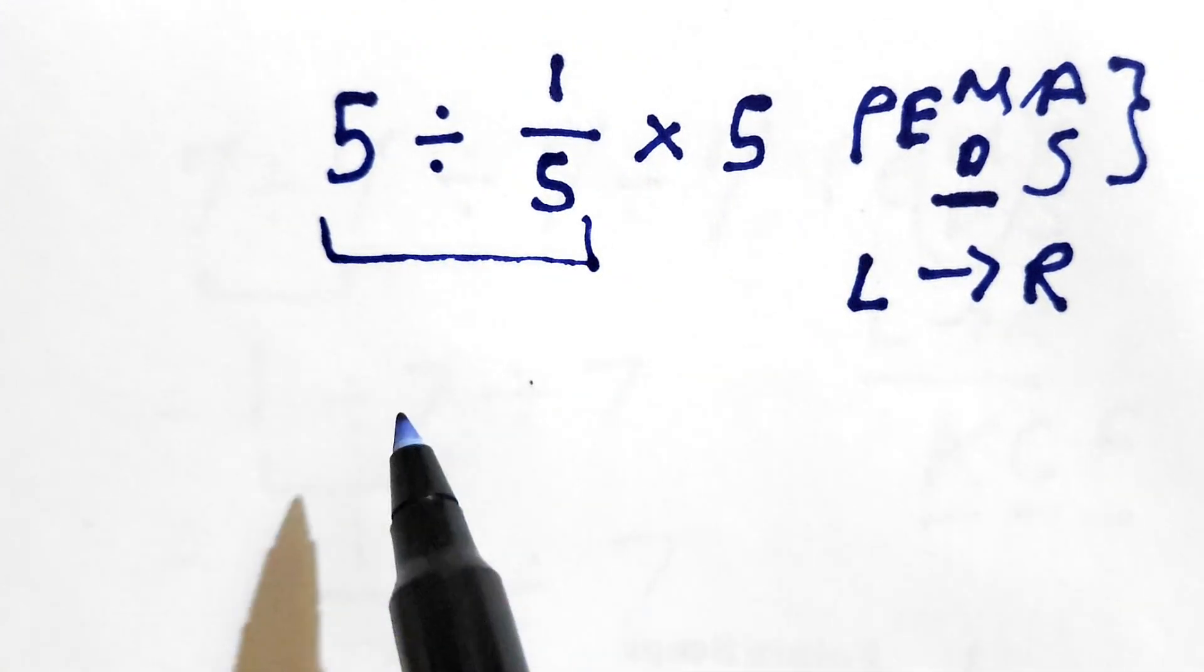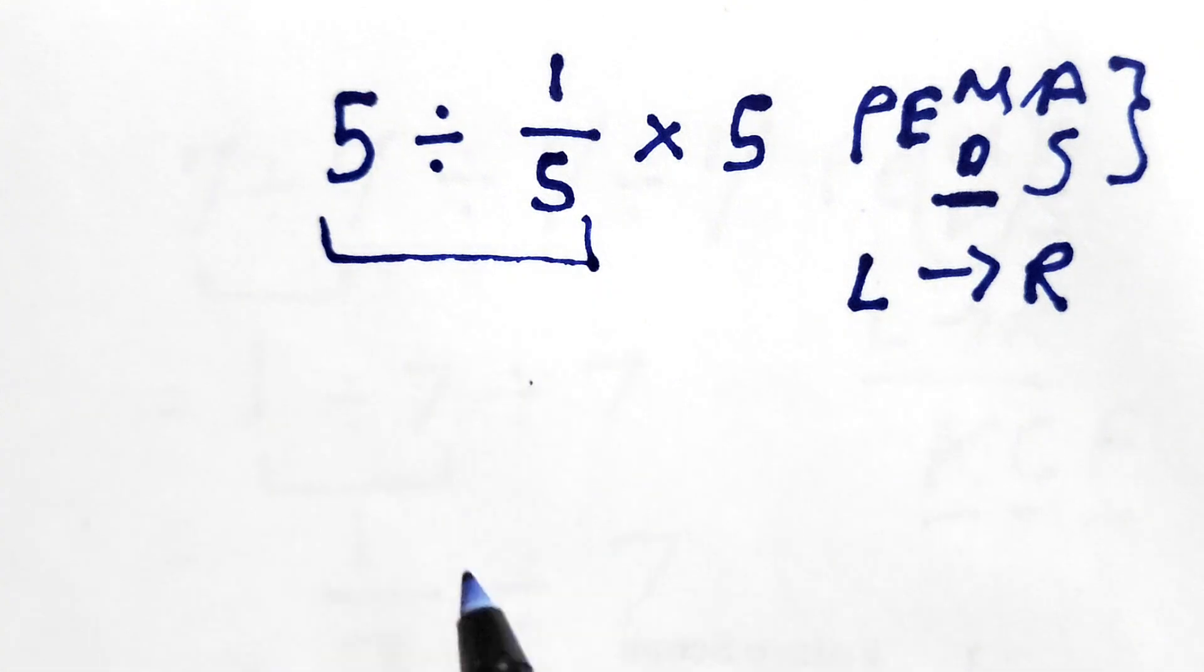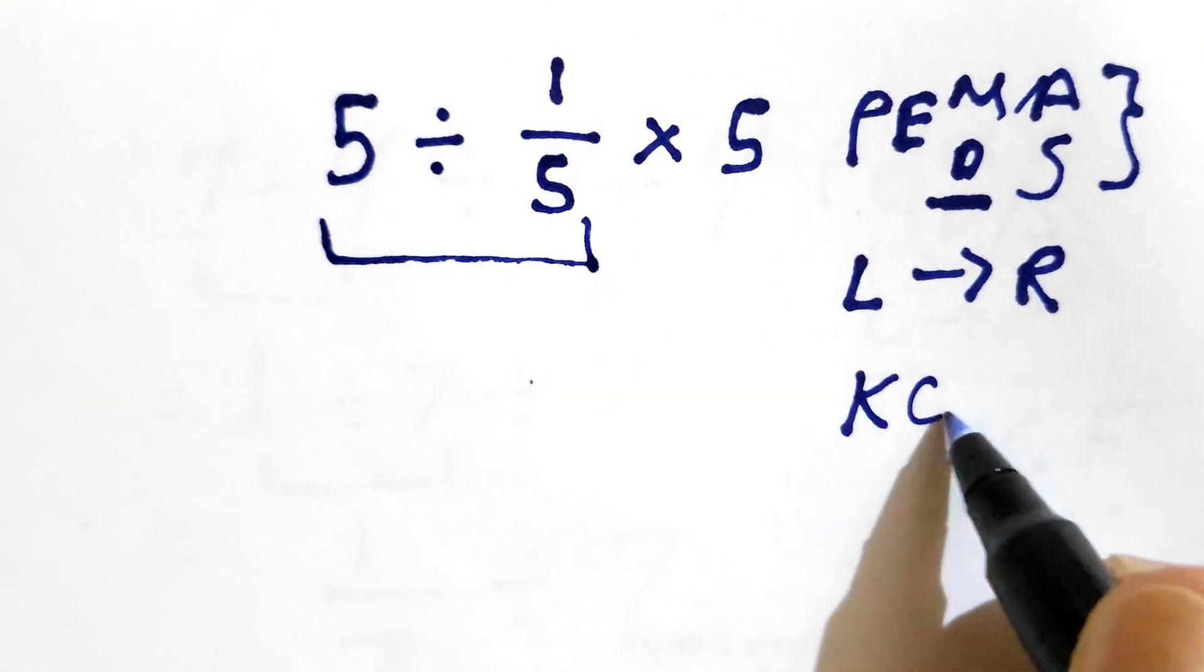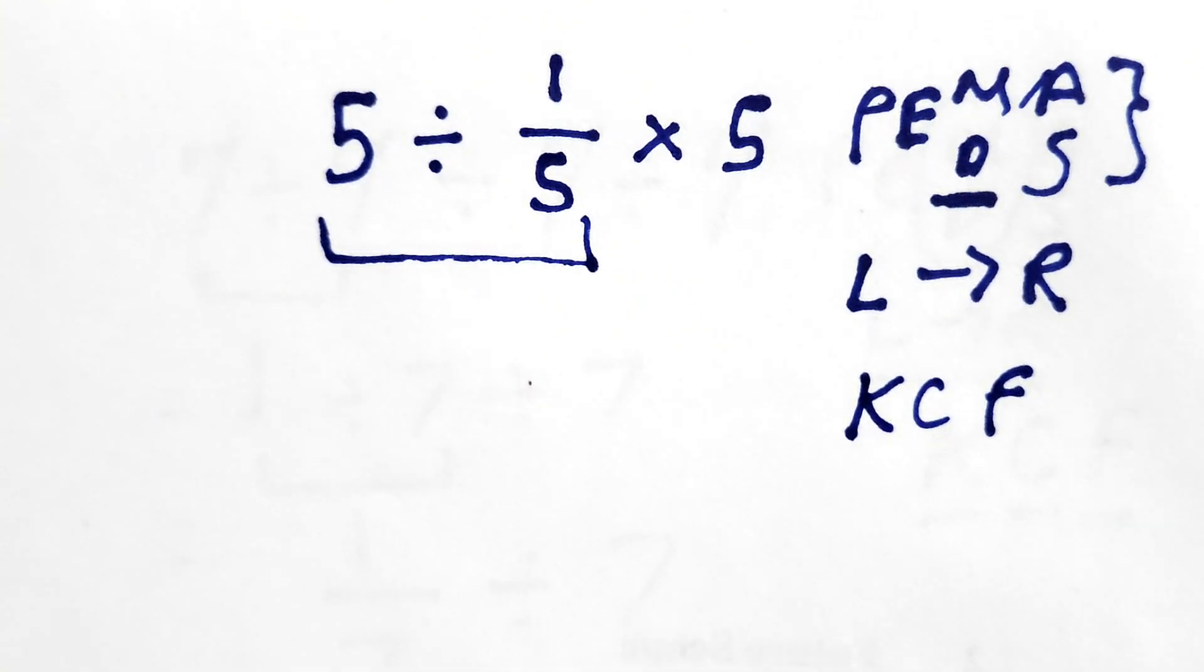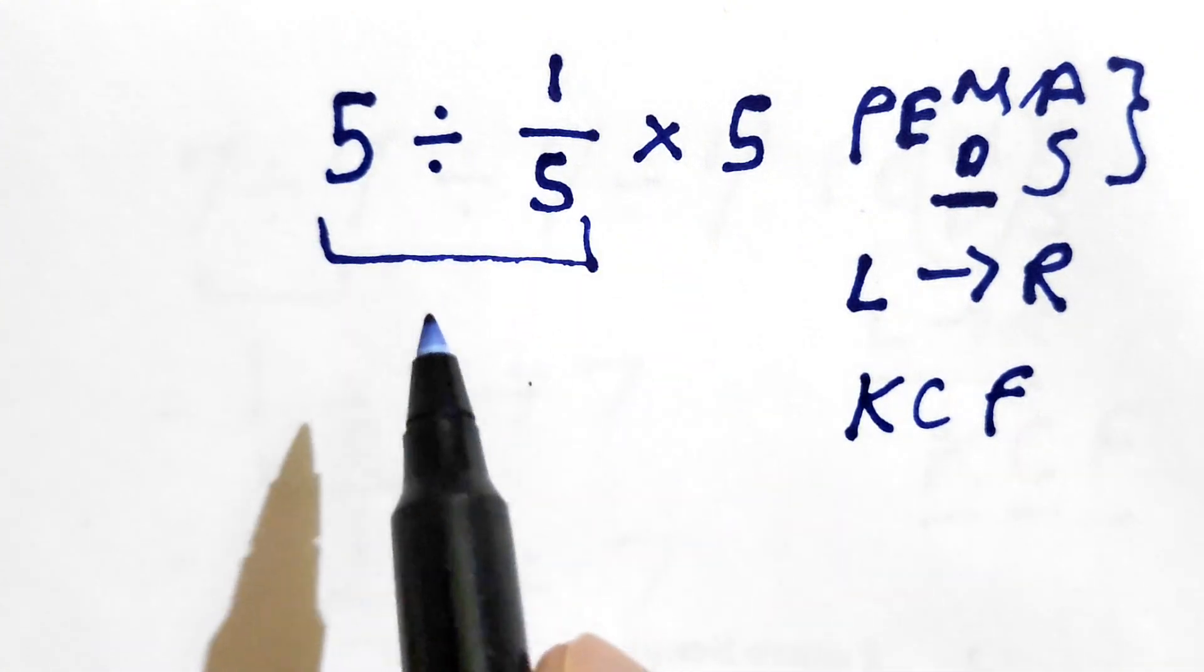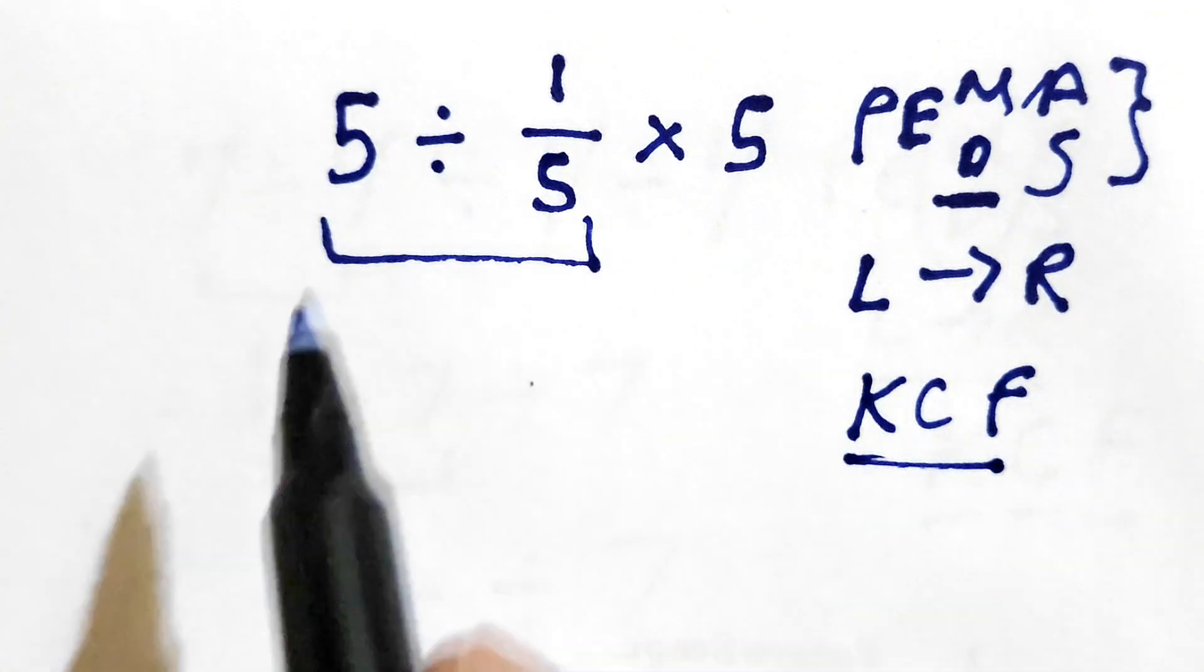For solving this, we need to follow one more rule, also called the KCF rule. It stands for keep, change, and flip. When we are dividing fractions, we need to follow this rule. So let's implement this.